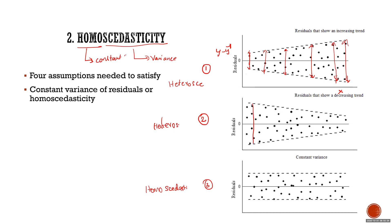In the starting stages variance is high, but as X value increases, the variance is decreasing. This is not a good sign for linear regression because there is still a pattern not being captured. Whenever you get a pattern like this, your regression will not work very well. There are other models which work very well in such cases.